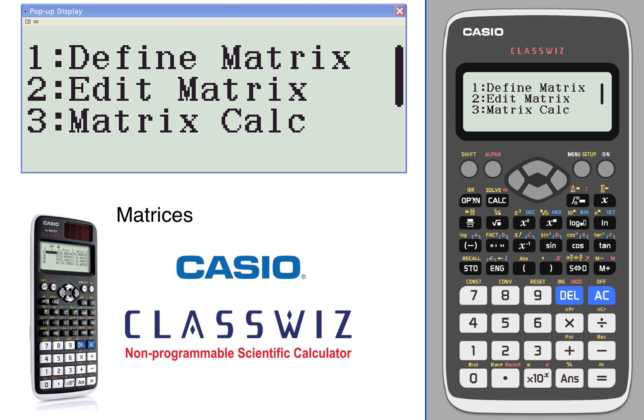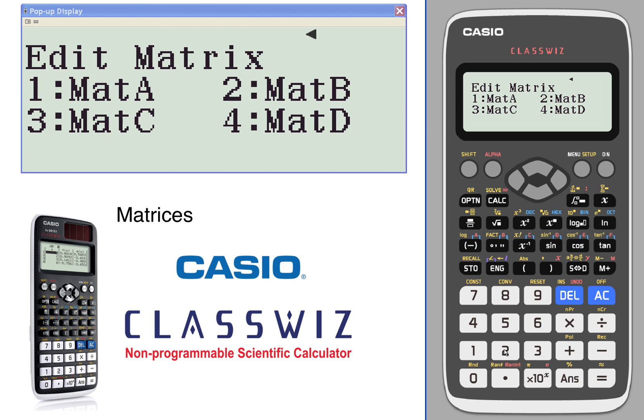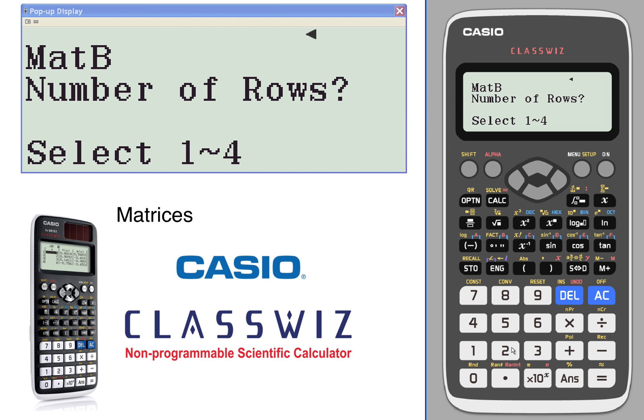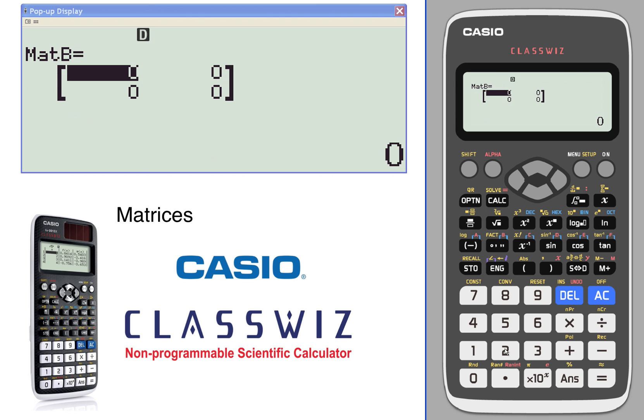Let's define the second matrix. We'll do matrix B. Again, we'll do a 2 by 2. Enter a couple of values.